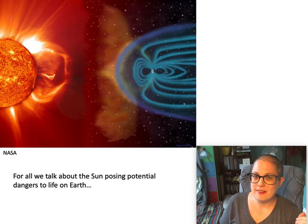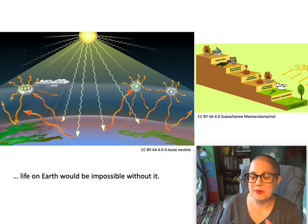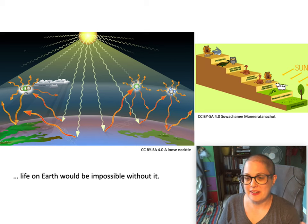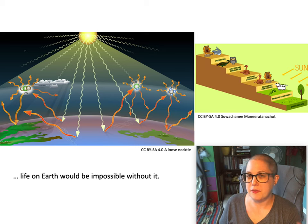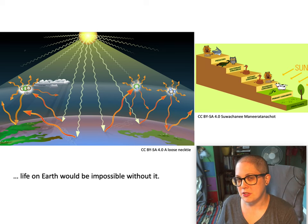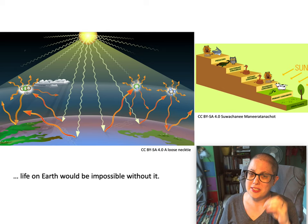However, for all I say about it being a danger, we would not have life on Earth without the sun. It would be impossible. So most of the energy used by living things ultimately comes from sunlight. There are a few microbes that get energy from other sources, but most life on Earth relies on sunlight, the energy from sunlight being trapped by photosynthesis by plants and other living things that use photosynthesis.